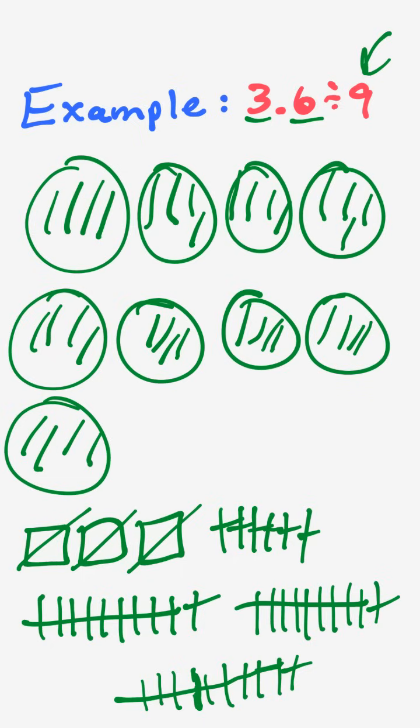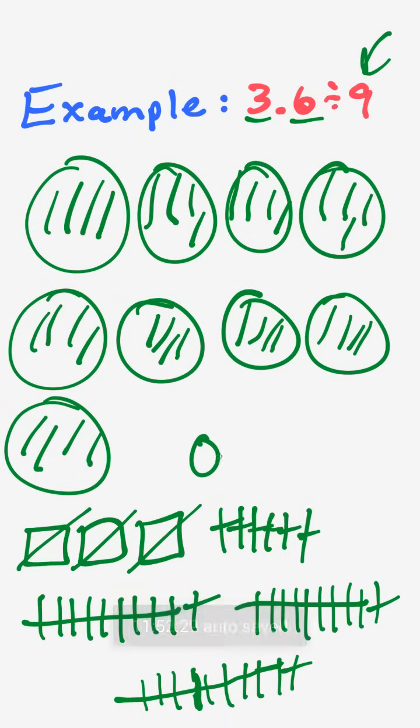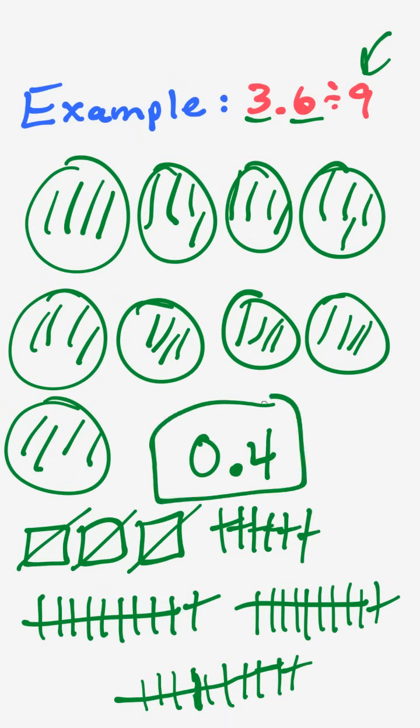And now I just count what's inside one of the circles to get my answer. I have one, two, three, four tenths. So this is how you write four tenths, and that is your answer.